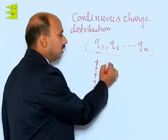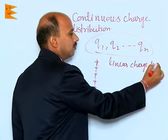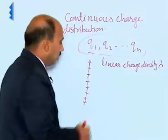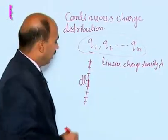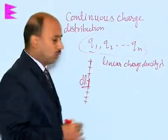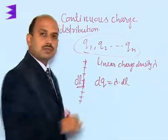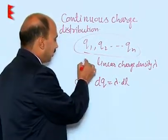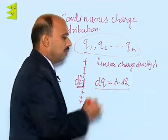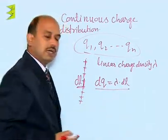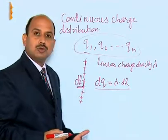Suppose this line has got the linear charge density lambda. First we consider a small length DL, and we can calculate the charge of this small length. DQ is equal to lambda into DL. So, if the charge is distributed on the line, we can write DQ equals lambda times DL, and by integrating we can get the whole charge, and then we can calculate electric field intensity or electrostatic force. Here we have to use calculus.